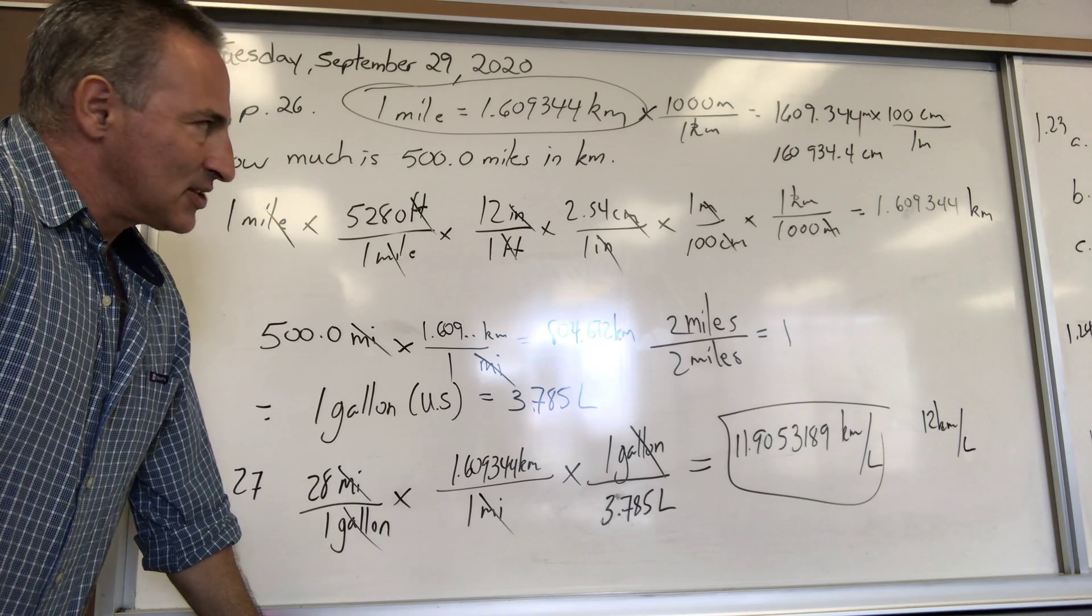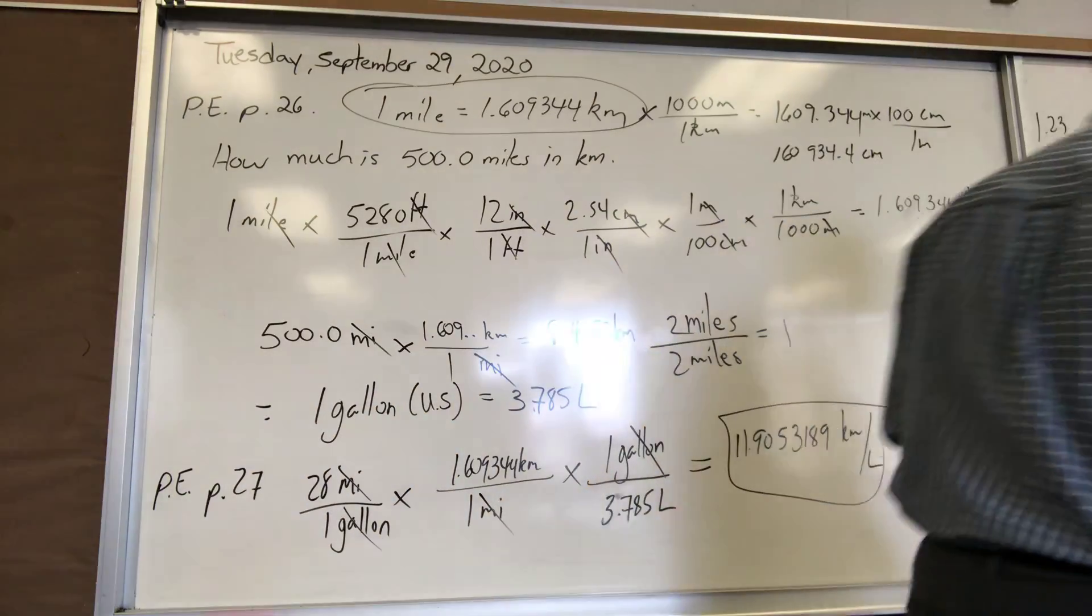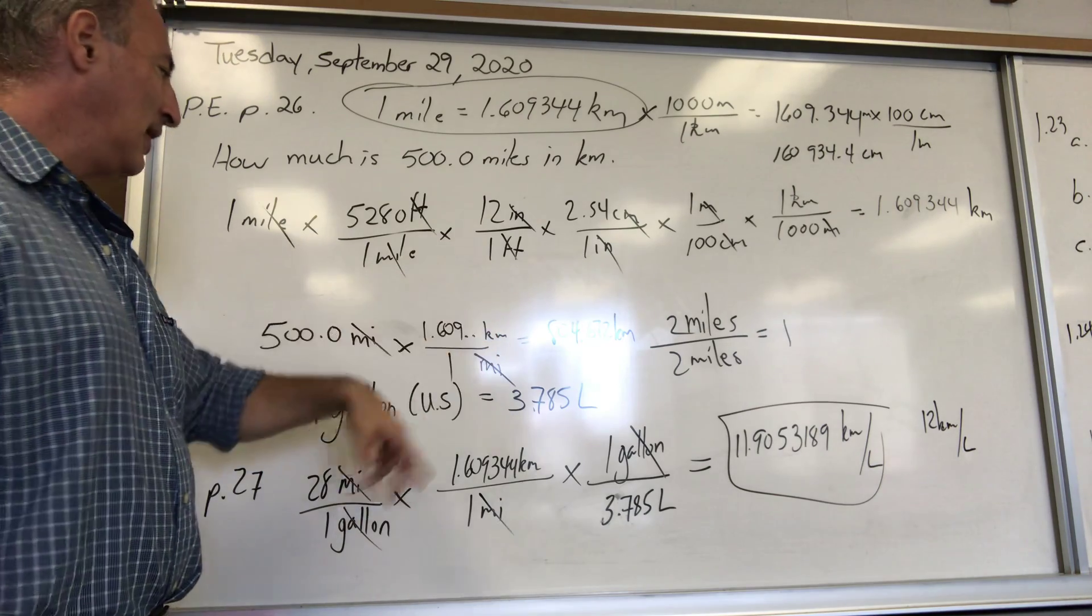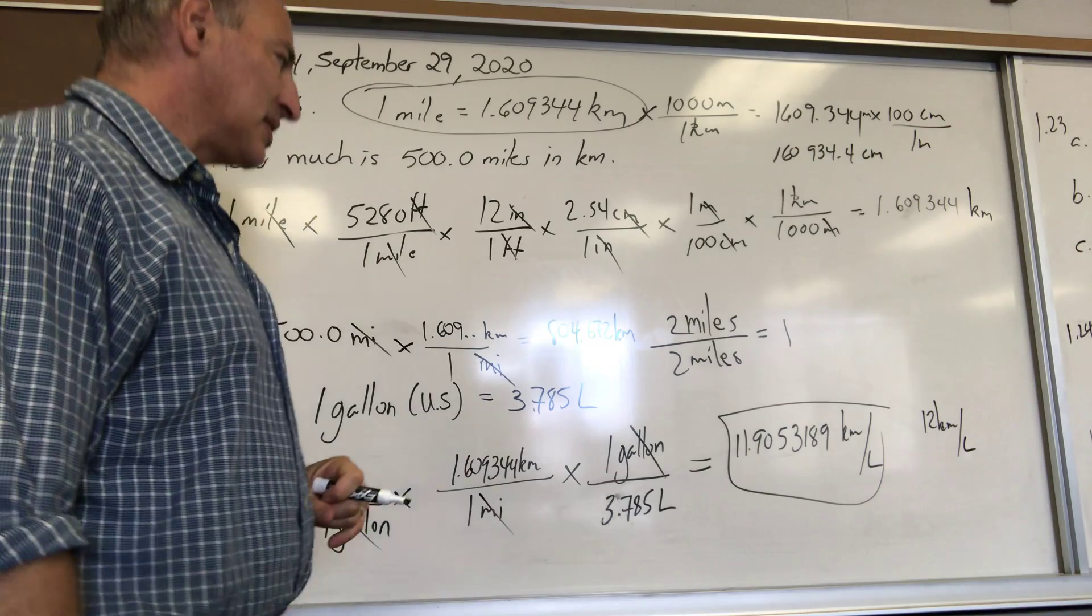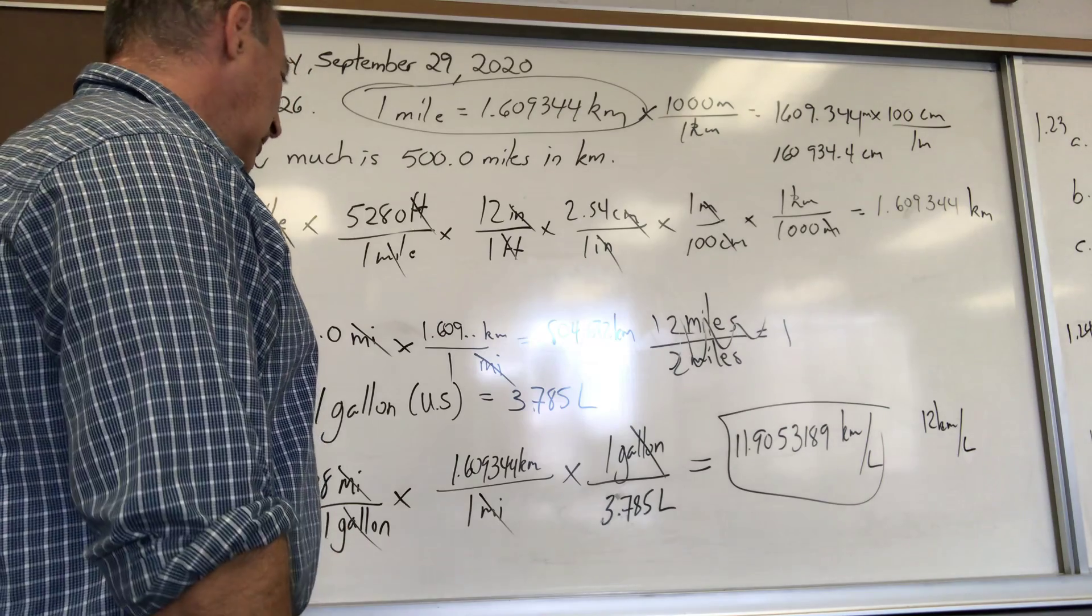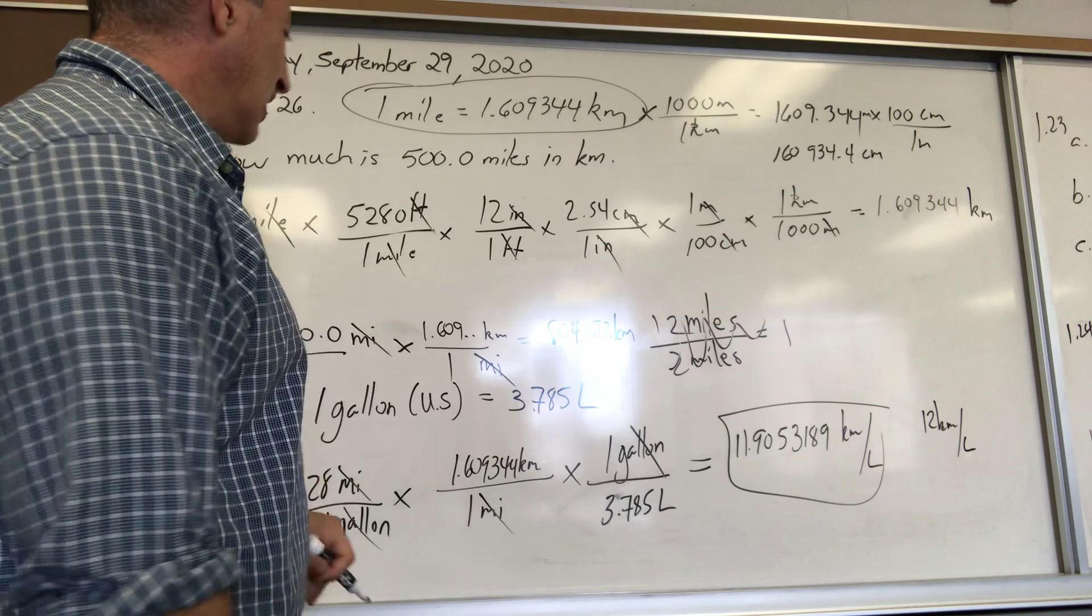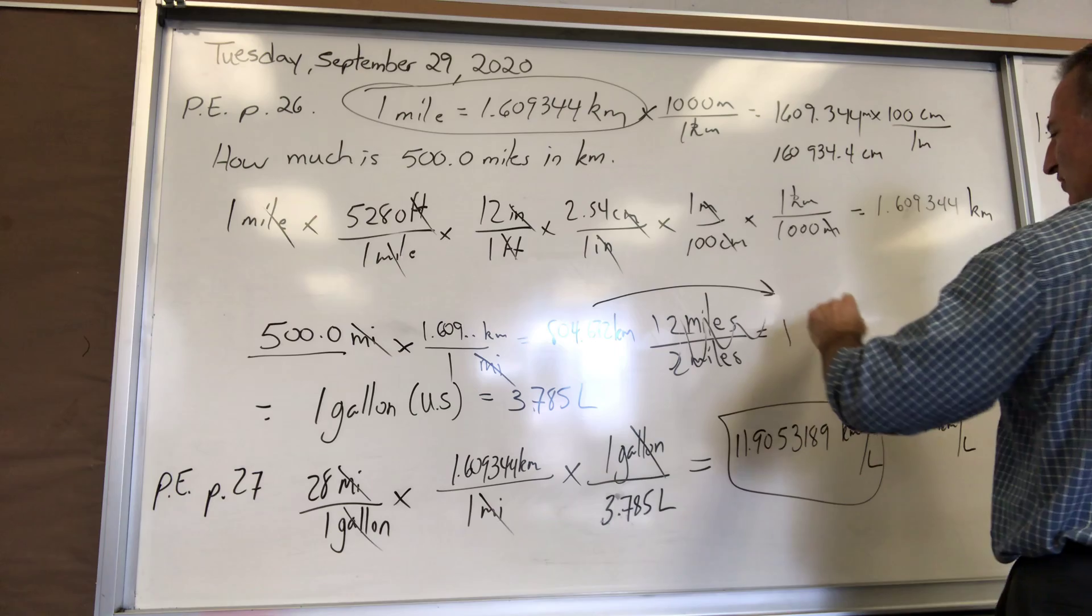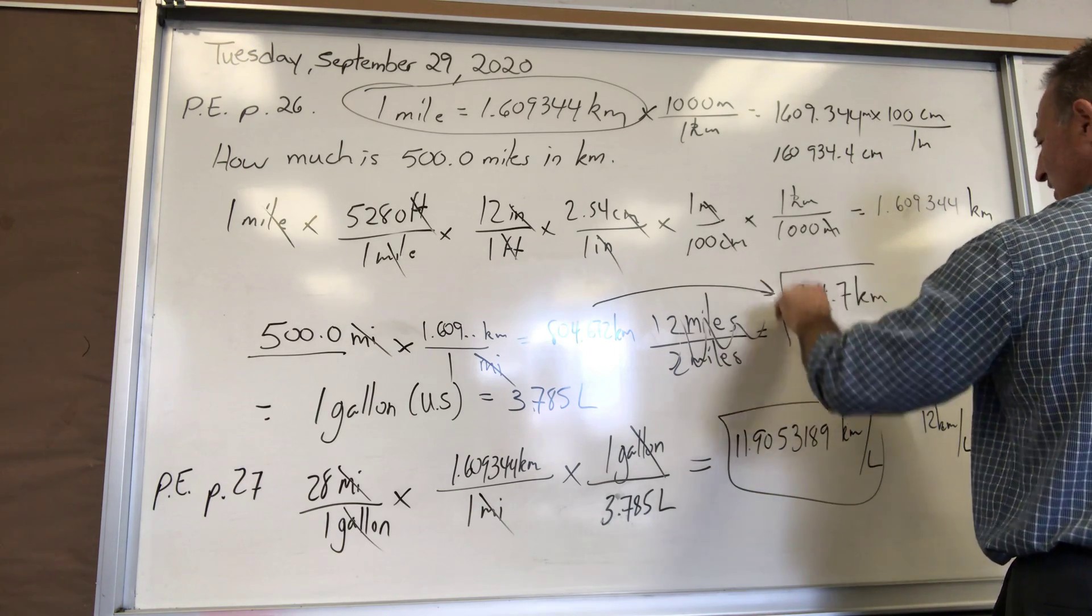Let's do our calculation that we originally had. We had 500 miles and we wanted to turn it into kilometers. So 500 times 1.609344 kilometers per mile allows me to cancel miles. The answer is 804.672. They originally wrote it with four sig figs, so you would say 804.7 kilometers as your final answer.